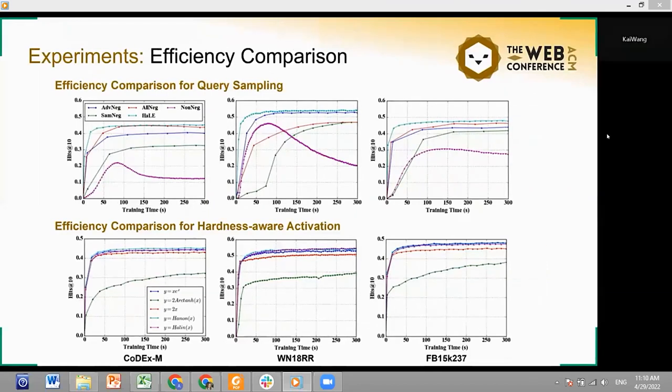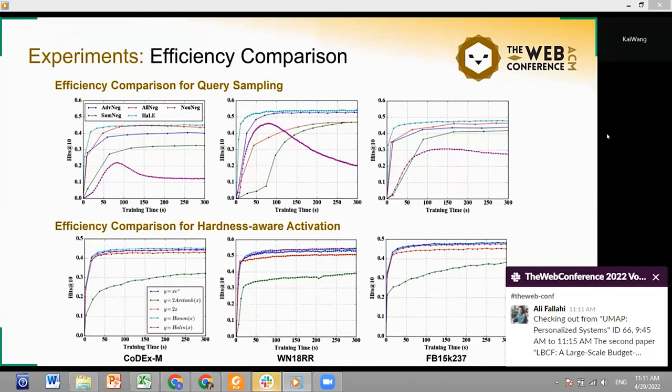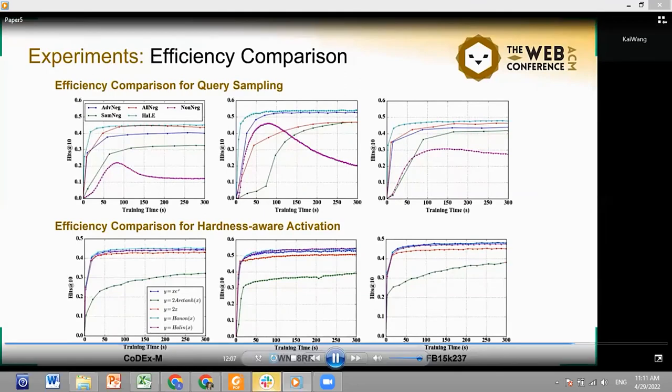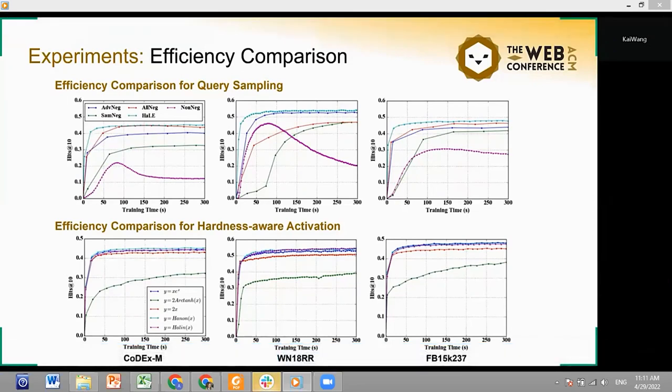Then we compare the effects of different training strategies. These charts show the growing curves of Hits@10 in the training period of the RotE model on the three datasets. It can be seen that the non-negative training loss, the purple curve, starts to decline after multiple training epochs. The green curve, which is the basic negative sampling, increases slowly at the first 100 seconds due to its unstable gradients. The all-negative loss and the RotE's weighted loss functions are better than the basic one. Then we confirm that our method in the light blue curve results in the best results in the whole period.